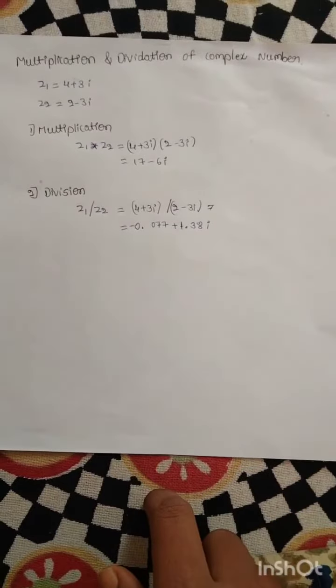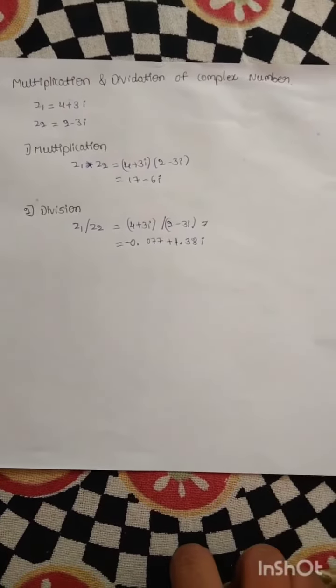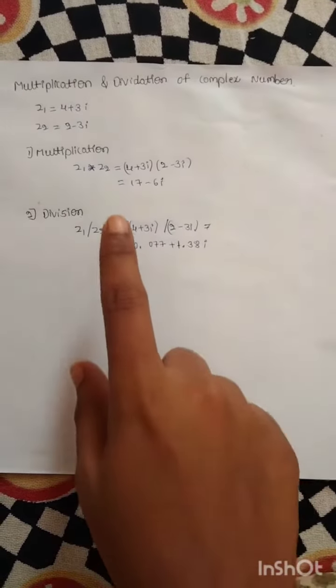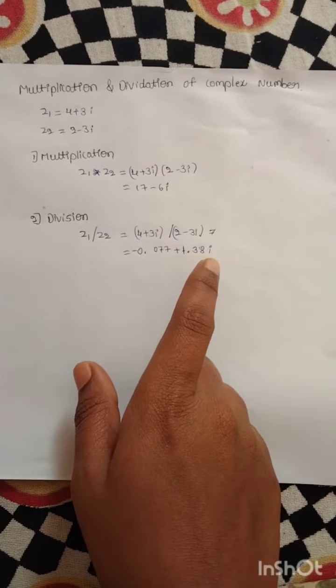To find the division of two complex numbers is z1 by z2. z1 equals 4 plus 3i divided by z2 equals 2 minus 3i. z1 by z2 equals minus 0.077 plus 1.38i.